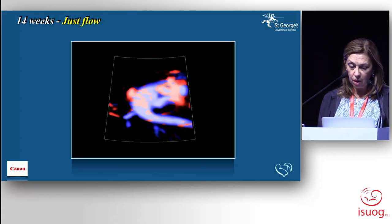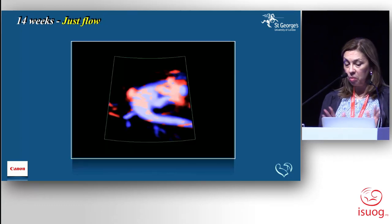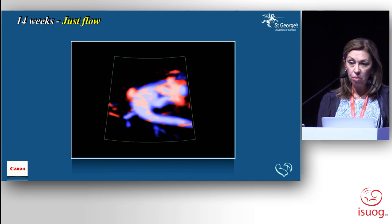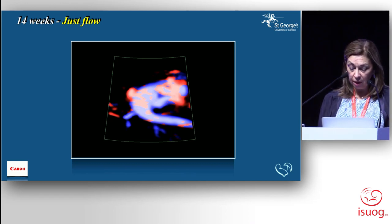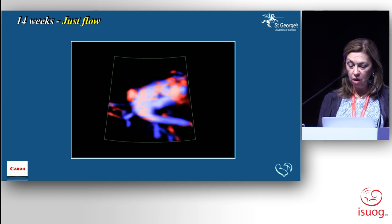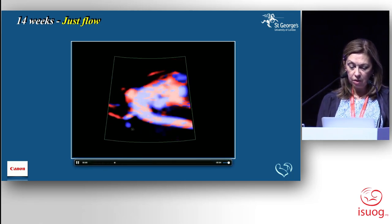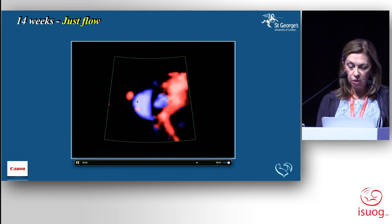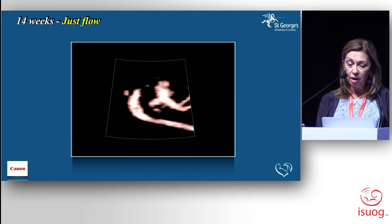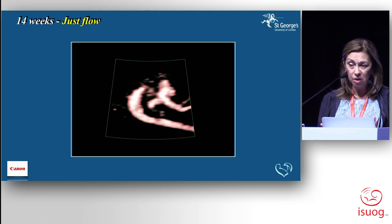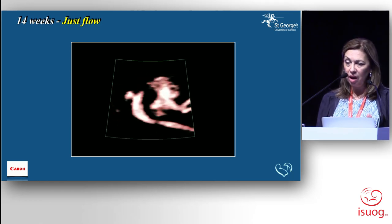Of course you have to add color — you can't do any scan, first trimester, second trimester, any trimester without color. It gives information about flows but also makes it easier to see the anatomy. Here we have the sagittal view with the IVC coming up into the right atrium, and the aortic arch — you can see the aortic arch looks normal, easier to see than in the 2D image. I call it 'just flow.' You don't need sophisticated equipment. You just turn down your B-mode gain when you put in the color and adjust the color gain settings, and you get an image which looks like an angiogram.